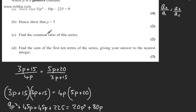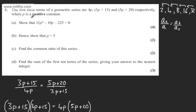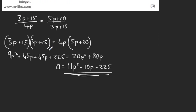In part B it says hence show that p equals 5, for 2 marks. We're told p is a positive constant. So if p equals 5, we can say that p minus 5 is a factor of this quadratic.